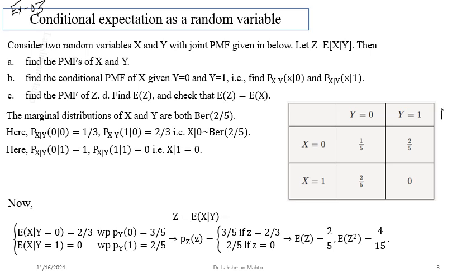Here X observes values vertically and Y observes values horizontally. To get the PMF of X, perform the row sum of the joint PMF: 1/5 + 2/5 = 3/5 for X=0, and 2/5 + 0 = 2/5 for X=1. These sum to 1, satisfying the PMF property. Similarly, performing the column sum gives PMF of Y — and it turns out X and Y have the same distribution, only the name has changed.